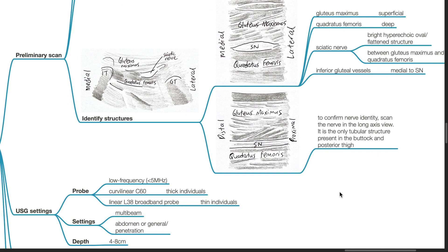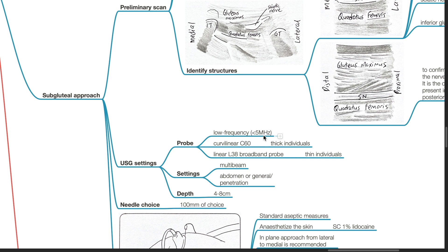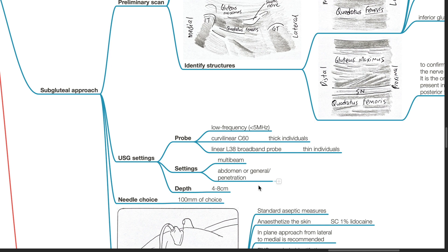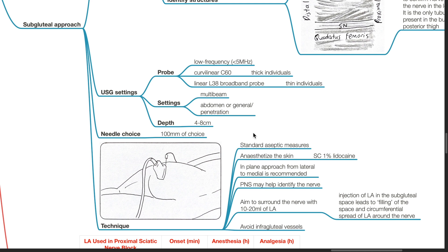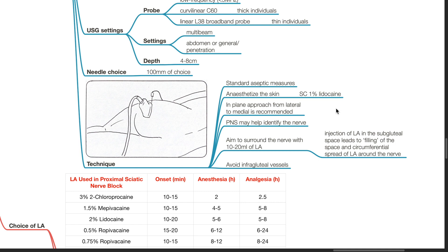Probe: curvilinear C60 in thick individuals, linear broadband probe in thin individuals. Settings: multi-beam or abdomen/general penetration. Depth: 4–8 cm. Needle of choice: 100 mm. Technique: standard aseptic measures, anesthetize skin with subcutaneous lidocaine. In-plane approach from lateral to medial is recommended. Peripheral nerve stimulation may help identify the nerve. Aim to surround the nerve with 10–20 mL of local anesthetic. Injection of LA in the subgluteal space leads to filling of the space and circumferential spread around the nerve. Avoid infragluteal vessels.